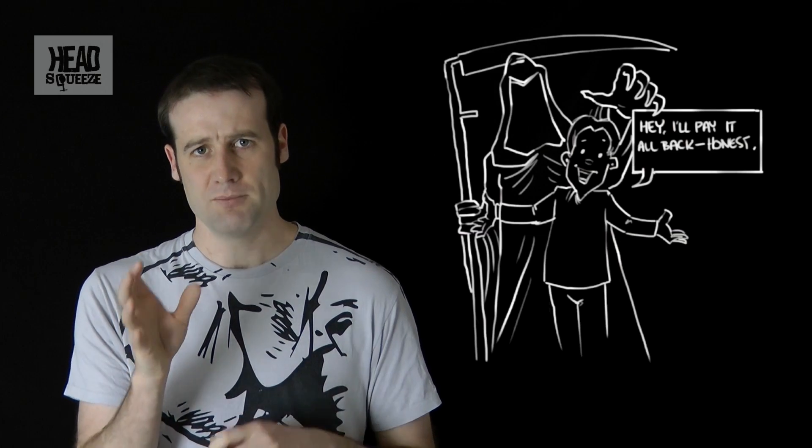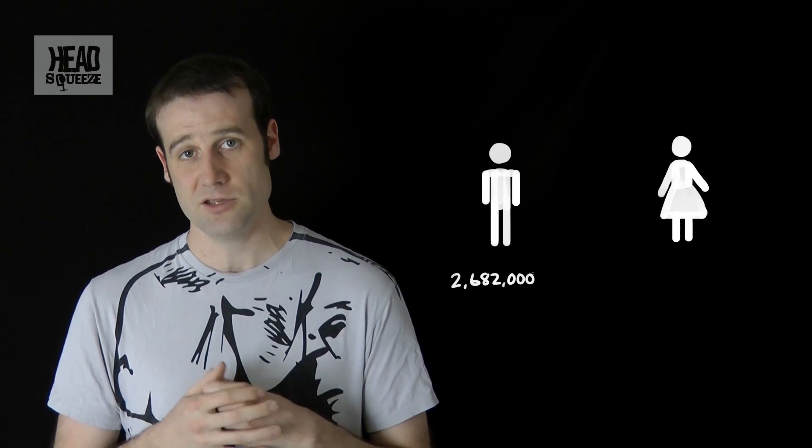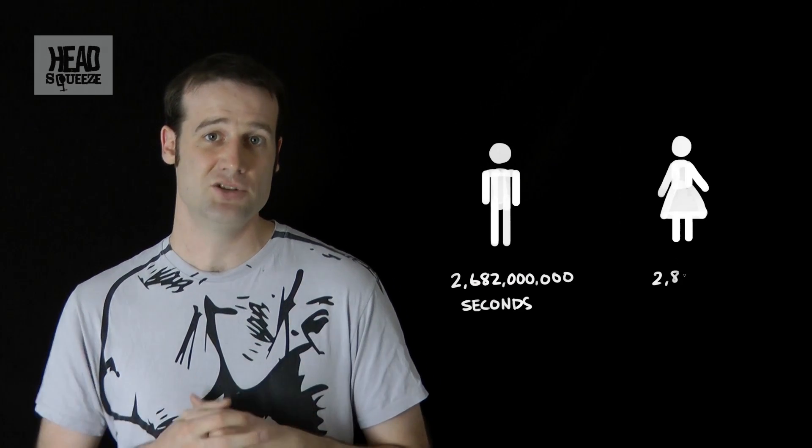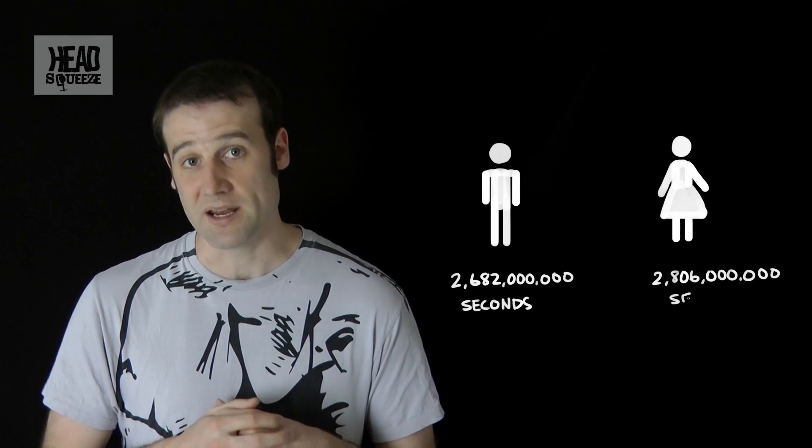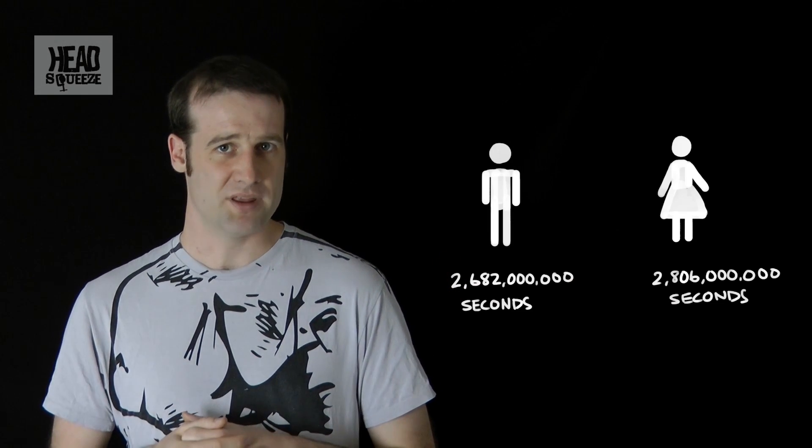In fact, as of the most recent stats I could get, which were the end of 2012, in the UK, the modal age of death for males was 85 years. Women, 89 years. This means that the most common age to die for men in the UK, as I speak, is 2,682,000,000 seconds. For women, that's 2,806,000,000 seconds. So you're never going to have to pay off more than that.